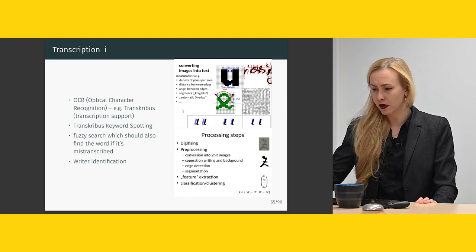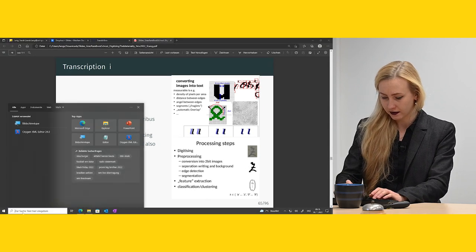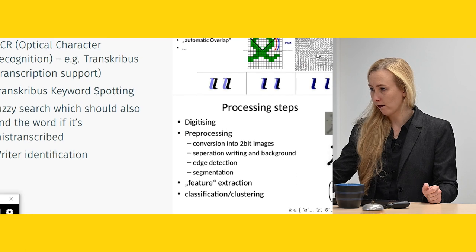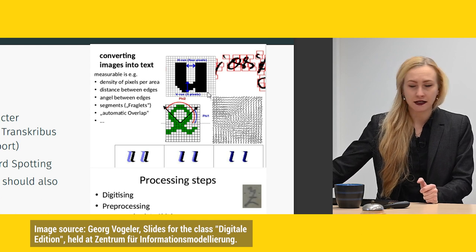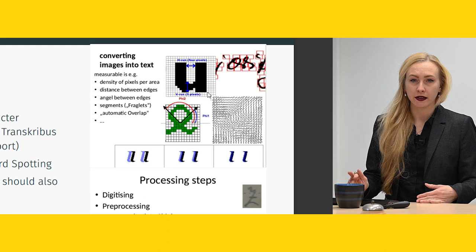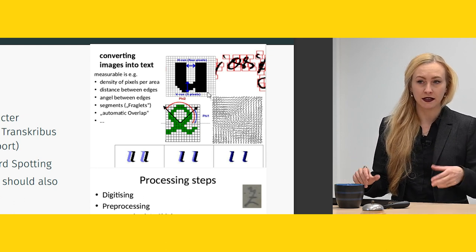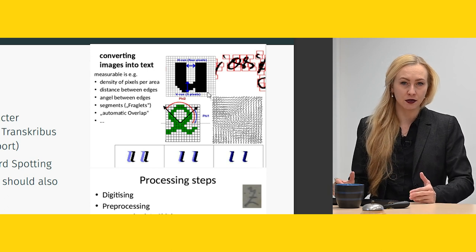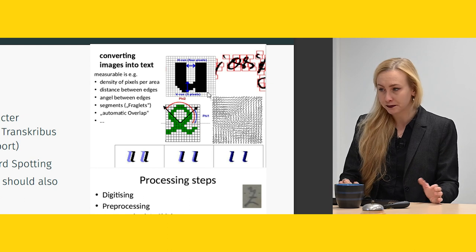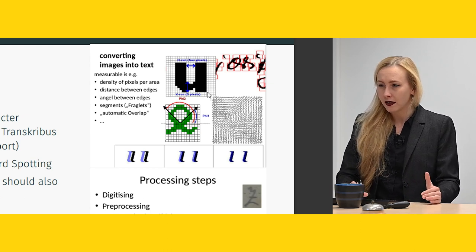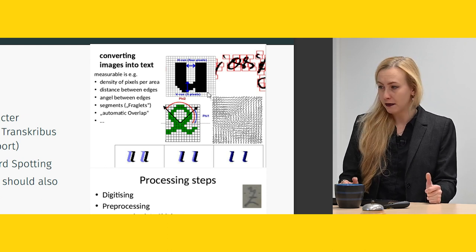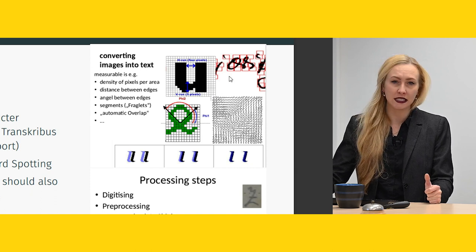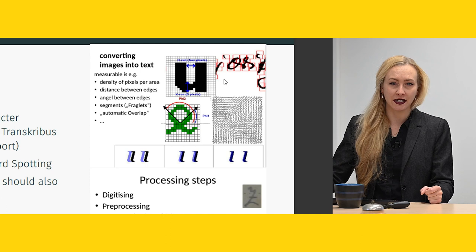There is also a fuzzy search, meaning it should find words even if they are mistranscribed or if there are smaller errors. Transcription can also be relevant for writer identification. When we want to convert image data — starting with the materiality, digitizing it, or transcribing directly from the book — if we go from the digitized image, there are a few steps in between. We need to convert images into text.